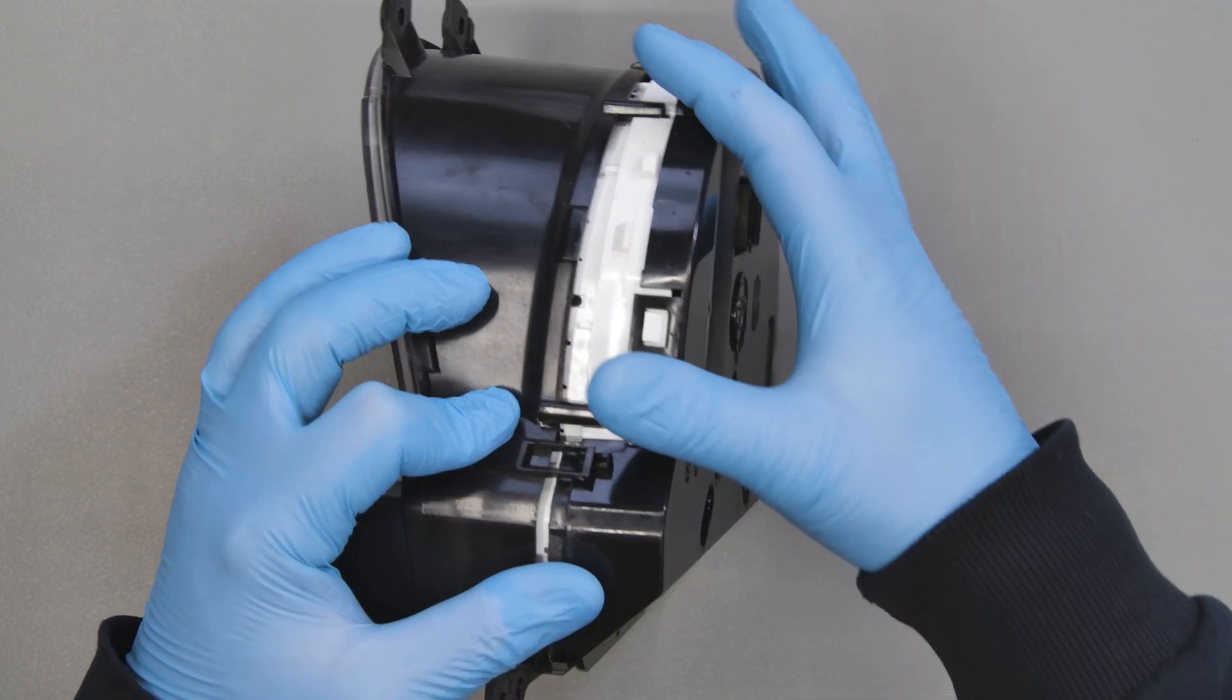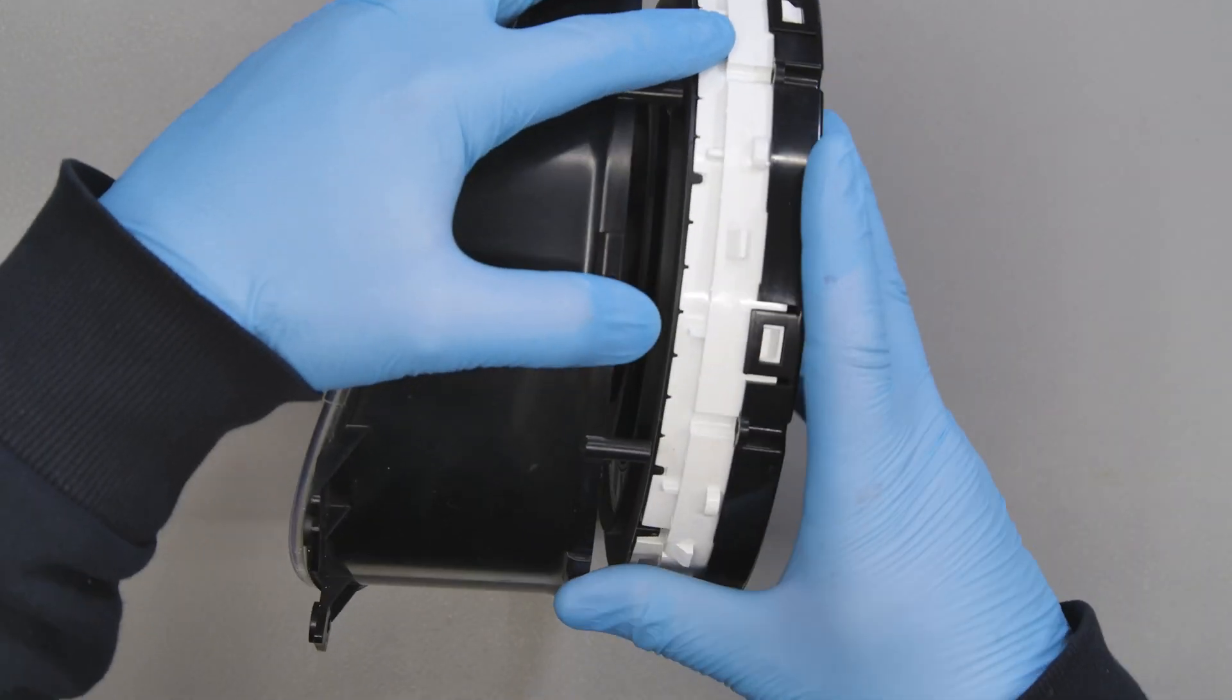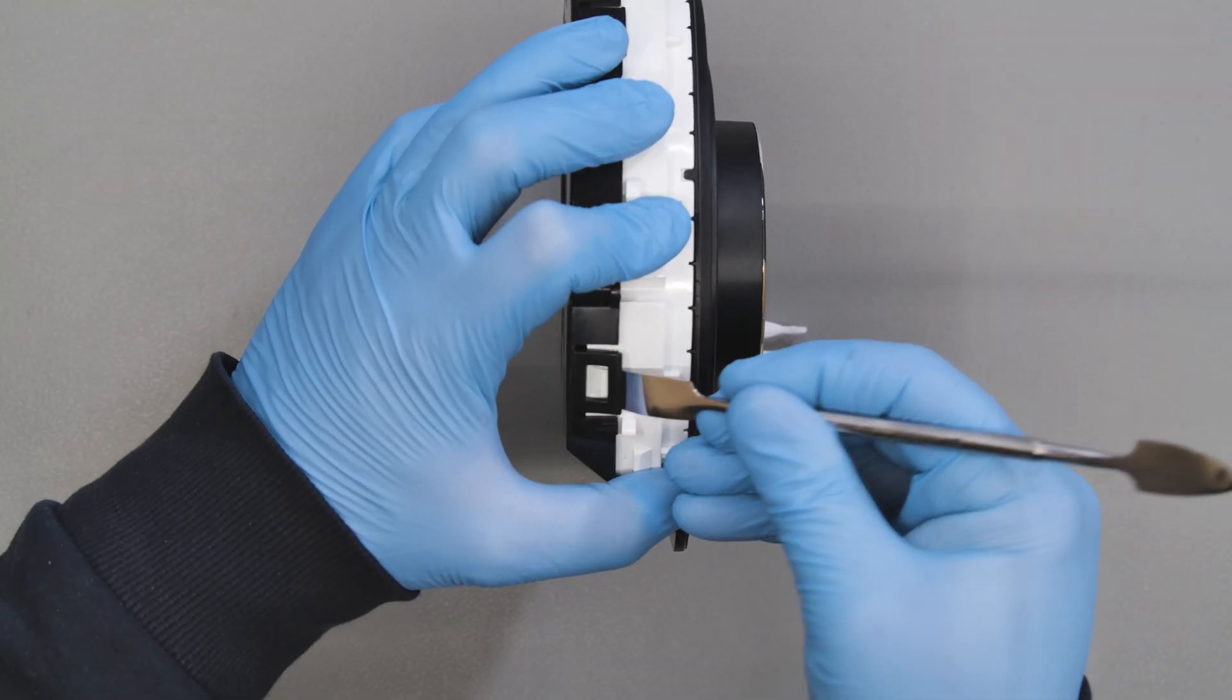With the head of the spudger, remove the front part of the panel, then the back one.